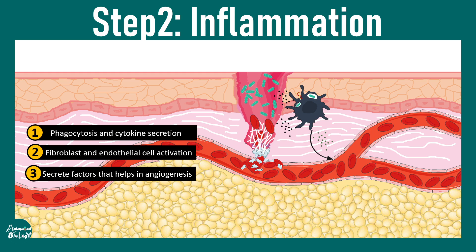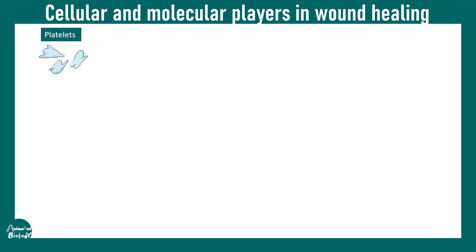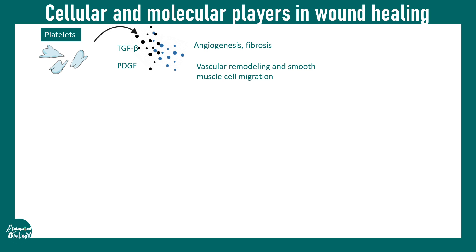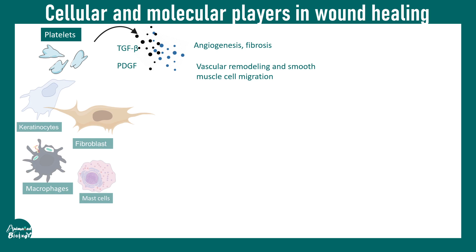In step two, macrophages play a very important role. They secrete substances that lead to angiogenesis — formation of new blood vessels. Key factors include PDGF and TGF-beta. Platelets secrete TGF-beta and platelet-derived growth factor, which lead to angiogenesis, fibrosis, vascular remodeling, and smooth muscle migration.